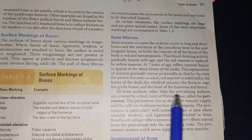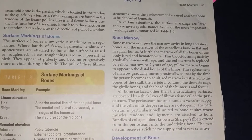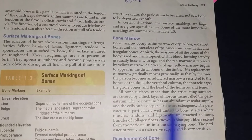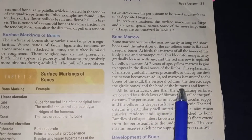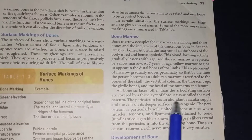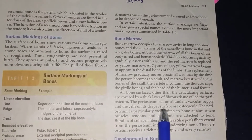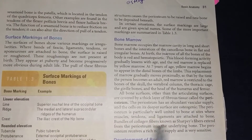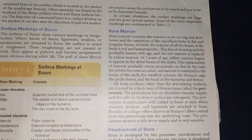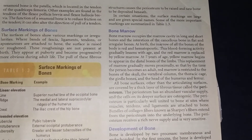All bone surfaces other than the articulating surfaces are covered by a thick layer of fibrous tissue called the periosteum. The periosteum has an abundant vascular supply, and the cells on its deeper surface are osteogenic — meaning they are responsible for further bone formation and development.